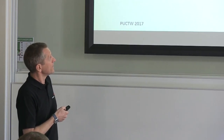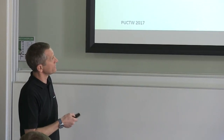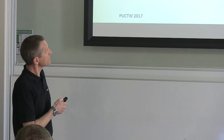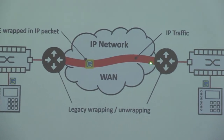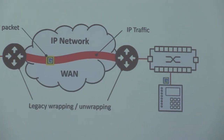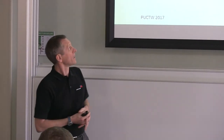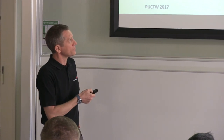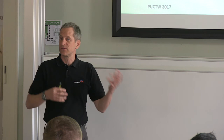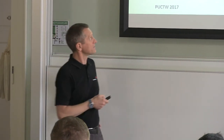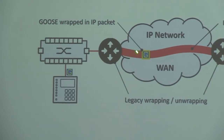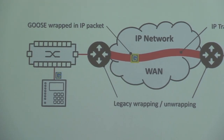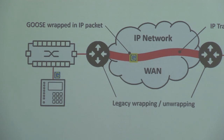The approach shown here uses some intelligence — for instance in a router — that takes the GOOSE on one side, wraps it into an IP packet, sends it over, and on the other side it gets unwrapped and republished. This brings the GOOSE message over an IP route through an IP network. However, those devices still have to match because the wrapping and unwrapping is still some kind of legacy mapping, though it opened the scope considerably.